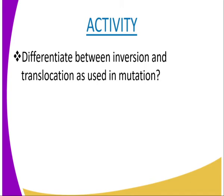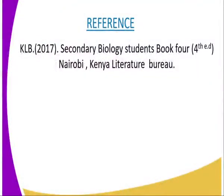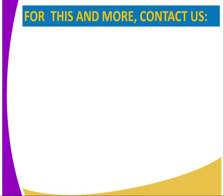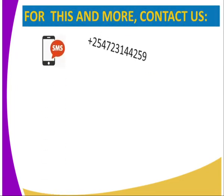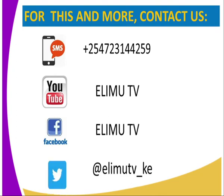Having said that, we have the following activity whereby you are required to differentiate between inversion and translocation as used in mutation. You can either use a diagrammatic representation or you can explain. For this information and this biology lesson, you can refer to KLB Secondary Biology Students Book 4, fourth edition, Nairobi, Kenya Literature Bureau. For this biology lesson and many more, you can contact us by sending an SMS through the number on our screen, or subscribe to our YouTube channel or Facebook page, both LimuTV, or tweet us at LimuTV underscore Kenya.